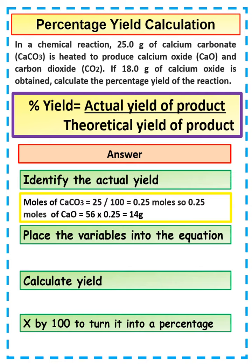We can then work out the relative formula mass of calcium oxide, which is 56. We're going to times that by the number of moles, which is 0.25. So our theoretical yield is 14 grams.